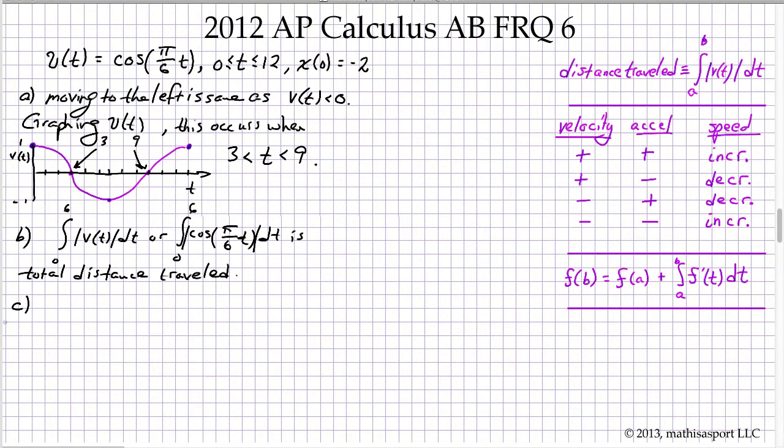Now in C we want the acceleration at t equals 4, so acceleration at 4 is the same as v prime at 4. And that means that we take the derivative with respect to t, cosine pi over 6t, and then once we've found that derivative we evaluate it at t equals 4. Well that's going to be by the chain rule, negative sine pi over 6t times pi over 6. I'm going to evaluate that at t equals 4 and I get a of 4 equals...